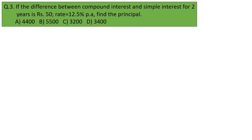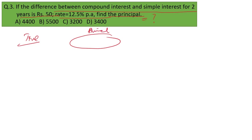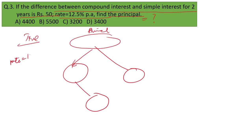The next question: the difference between compound interest and simple interest for 2 years is rupees 50, and the rate is 12.5% per annum. Find the capital. I will use the tree method again. Rate = 12.5% = 1/8, where 1 is the interest and 8 is the principal.